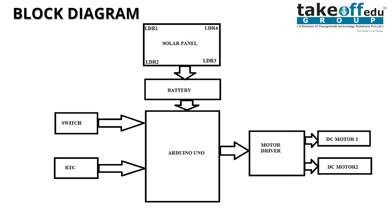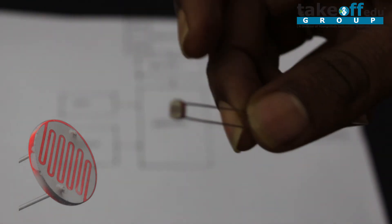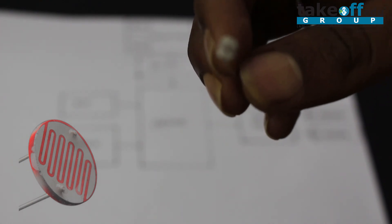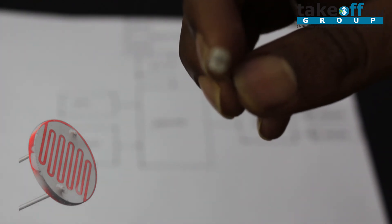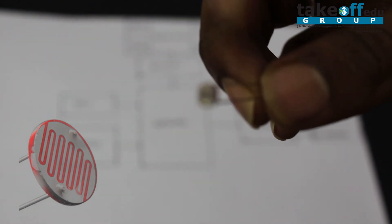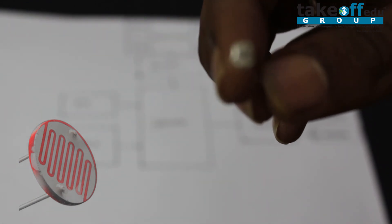Coming to the hardware requirements, we are using an LDR — LDR means light dependent resistance. It varies its own resistance depending on the light. If light is increased, it has high resistance. If there is no light, it will have low resistance.